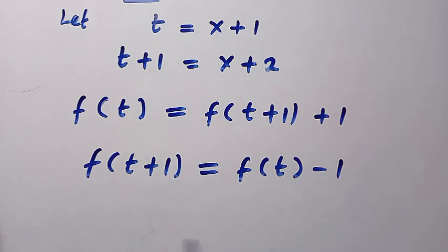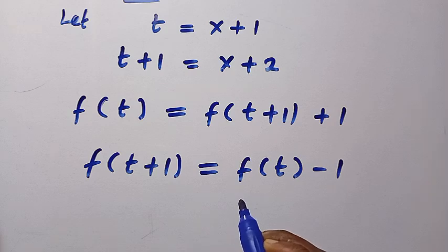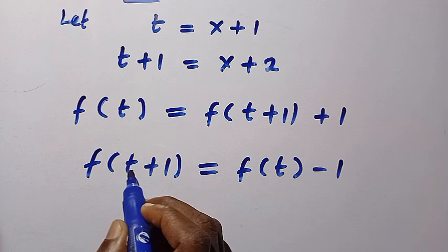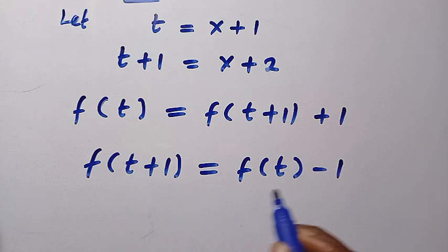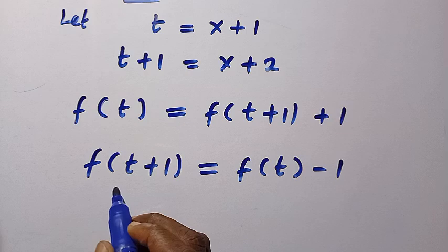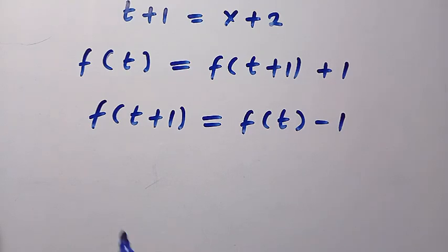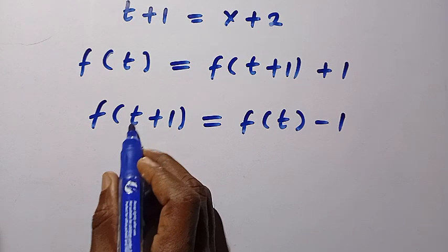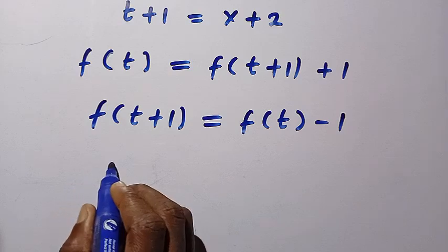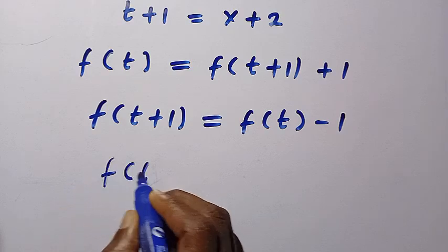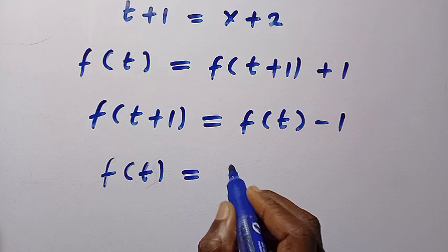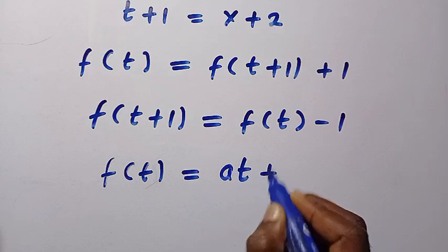Let's understand something at this stage. If we increase the input by 1, the output will always decrease by 1. This shows that this is a linear function. When we assume the general equation of a linear function considering t, we are going to have f of t equals a times t plus b.